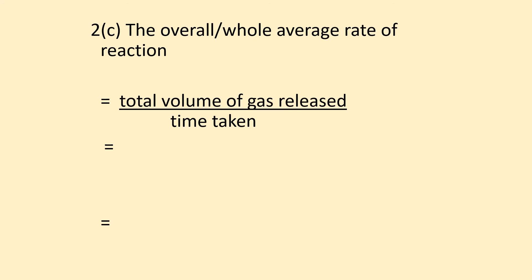For part c, the overall average rate of reaction: take the total volume released, which reaches maximum at 50 cm³. The time when it first reaches 50 cm³ is 6 minutes. So calculate 50 cm³ divided by 6 minutes equals 8.33 cm³ per minute. Three significant figures is fine.